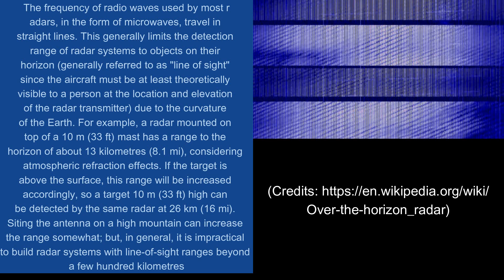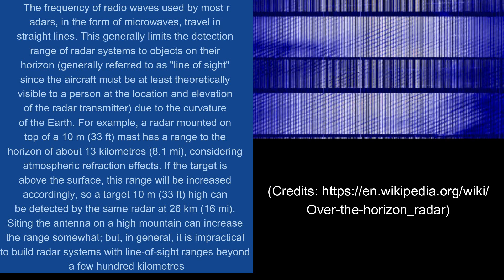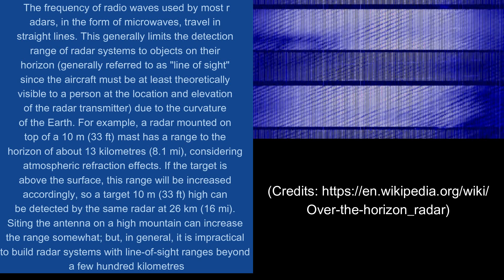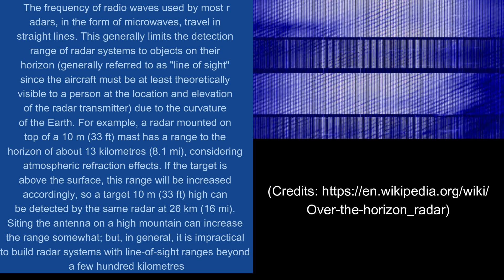Sighting the antenna on a high mountain can increase the range somewhat, but in general, it is impractical to build radar systems with line of sight ranges beyond a few hundred kilometers.